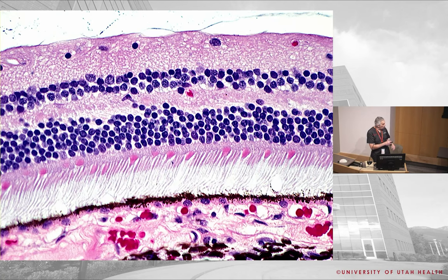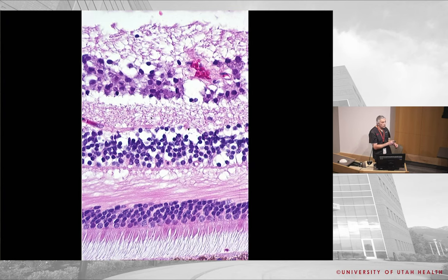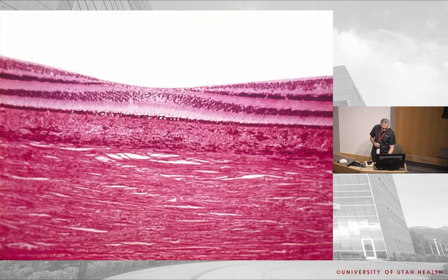Now, where are we in the retina? Looking here, the ganglion cell layer is multiple cell layers thick — so we know we're in the macula. When we look at the center of the macula, what is this area called? The fovea.